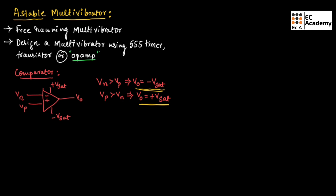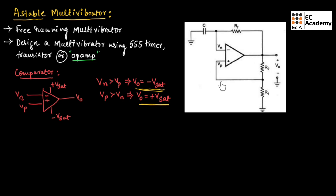With this knowledge, let us understand the working of the astable multivibrator. This figure shows the astable multivibrator. From the output, a feedback is connected to the negative terminal of the op-amp as well as the positive terminal. At the negative terminal, a capacitor is connected which is in turn connected to ground. The voltage across the capacitor is Vc, and the voltage across the negative terminal VN is equal to Vc.